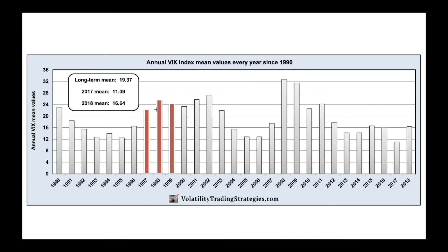So much for the fear index — those were some of the highest average values we saw, yet the S&P 500 was performing extremely well. In fact, the annual returns for those three years were substantially better than 2016 to 2018, yet the VIX recently has been far lower. Even 2018, which was a negative year for stocks, had a VIX mean of only 16.64 — below the historical average and way below the values from the dot-com run-up.